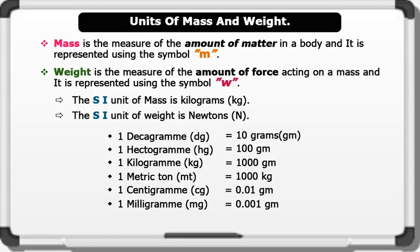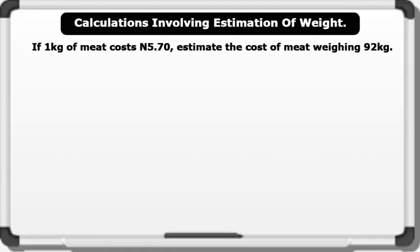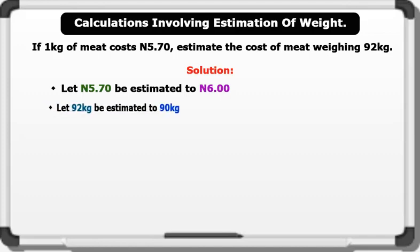Now let's see some calculations involving estimation of weight. If 1 kilogram of meat costs 5 Naira 70 Kobo, estimate the cost of meat which weighs 92 kilograms. Solution: Following the general rule of estimation, let 5 Naira 70 Kobo be estimated to 6 Naira. Let 92 kilograms be estimated to 90 kilograms.